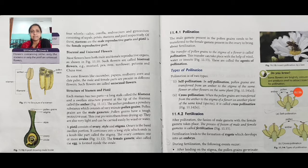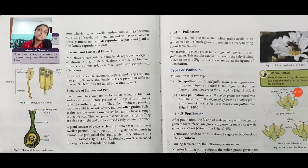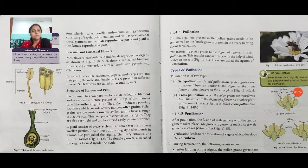Then pollination: the male gametes present in the pollen grains need to be transferred to the female gametes present in the ovary to bring about fertilization. The transfer of pollen grains to the stigma of a flower is called pollination. This transfer can take place with the help of wind, water, or insects. These are called the agents of pollination.